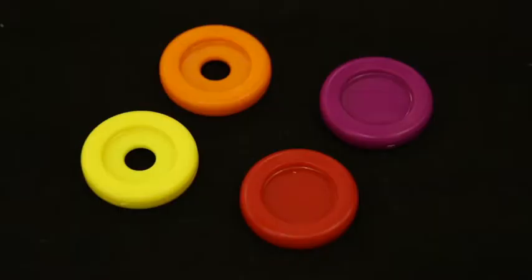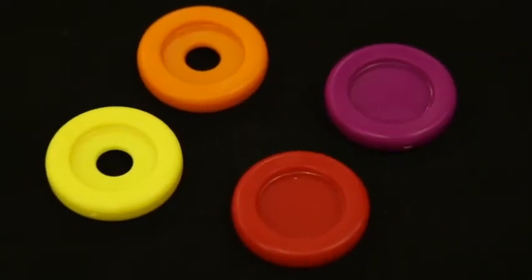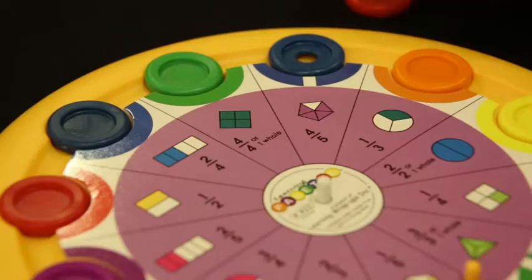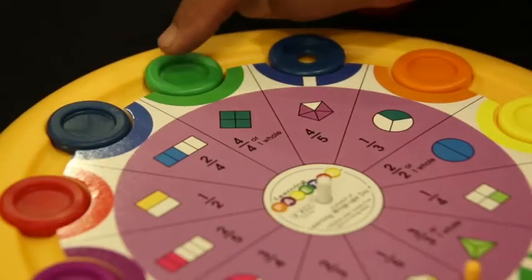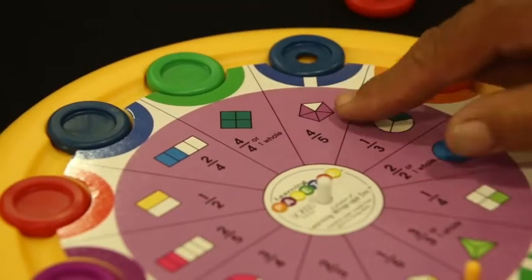You will notice that there are solid disks and disks with holes. Some teachers call these the donuts and the cookies. The answers also provide differentiation between the solid disks and the disks with holes.